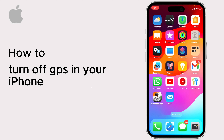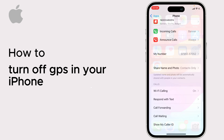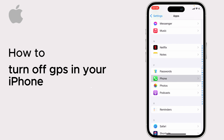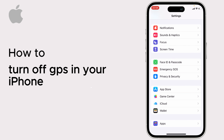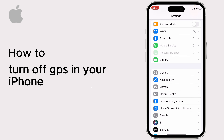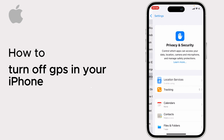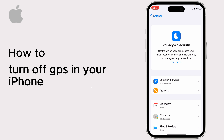Hello everybody, today I will show you how to turn off GPS in your iPhone. Open the Settings app on your iPhone, then scroll down and tap on Privacy and Security — you'll find it here.